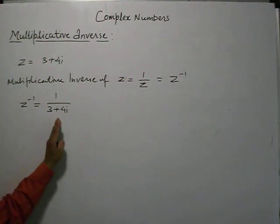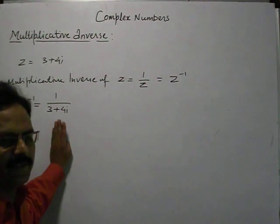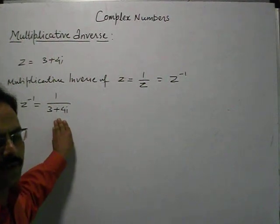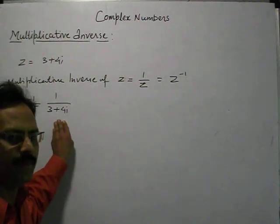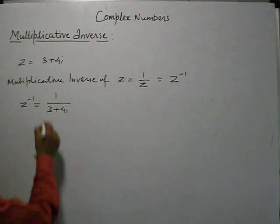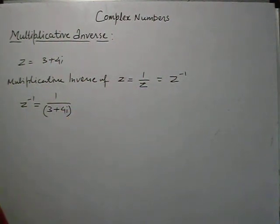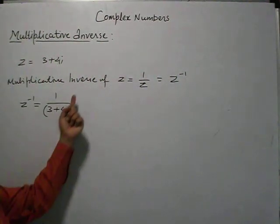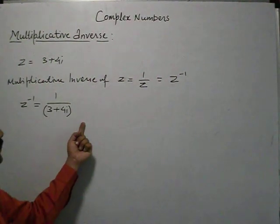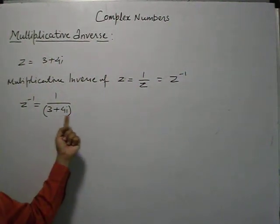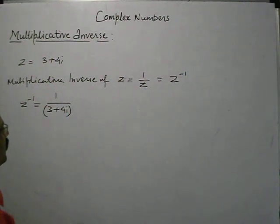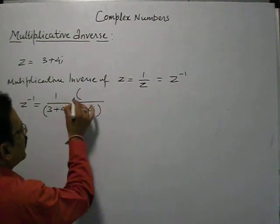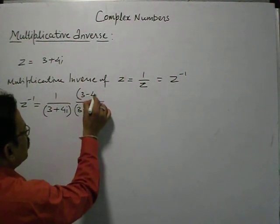Now it is not in the algebraic form. The algebraic form is a plus ib. So we have to convert this multiplicative inverse into a plus ib form. How will we convert this? Because in the last session we studied about the conjugate of a complex number. So we will multiply both the numerator and denominator with the conjugate of the denominator. The conjugate of this denominator would be 3 minus 4i.